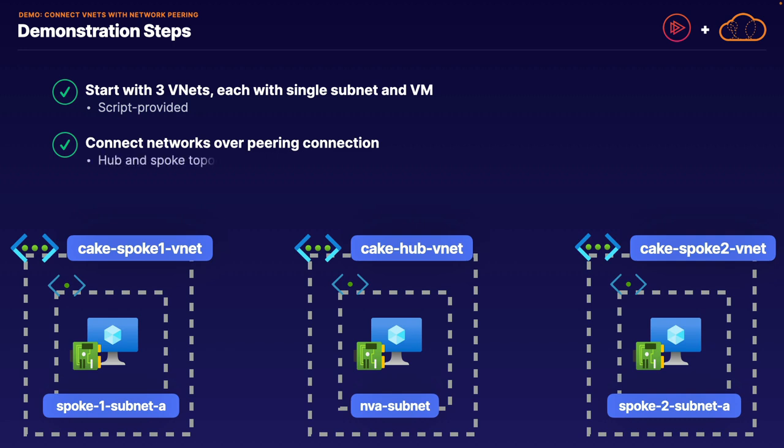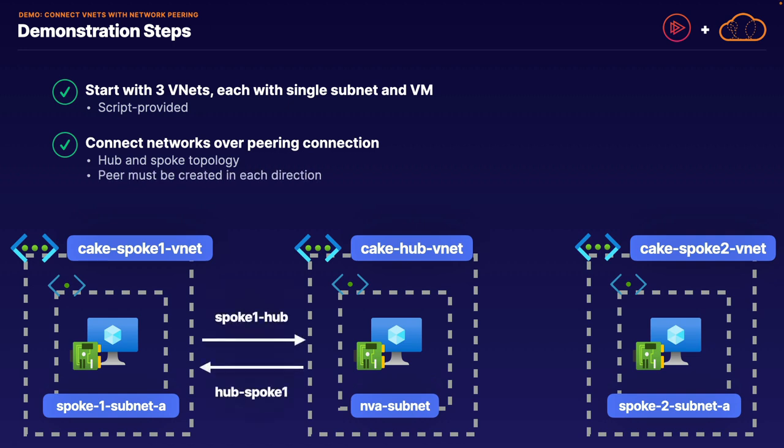We are going to adopt a hub and spoke topology in which our CakeHub VNet will be the hub of our topology, and our Spoke1 and Spoke2 VNets will be our spokes. We will then demonstrate creating our peering connections in each direction.